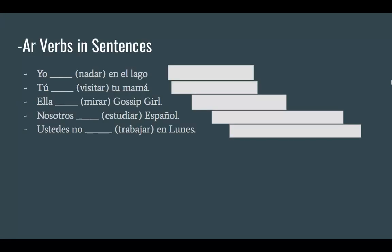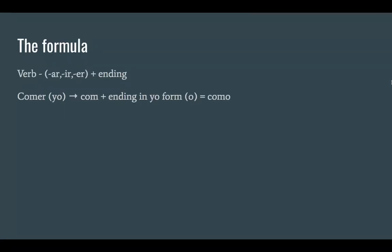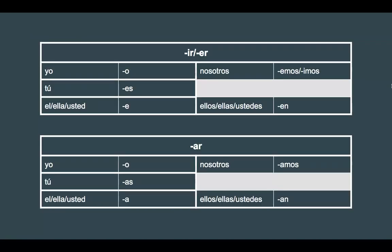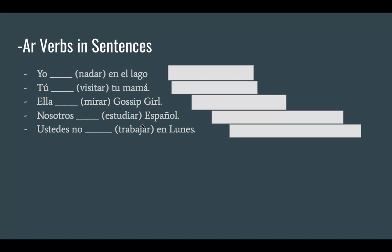Let's do some practice. We're going to conjugate 'nadar' in the yo form: 'yo blank en el lago' — I swim in the lake. Thinking back to our formula, we take nadar minus the AR, and we're left with 'nad'. Then we add the ending in the yo form — it's an AR verb, so yo is 'o'. Nad plus o gives us 'nado'. Yo nado en el lago.